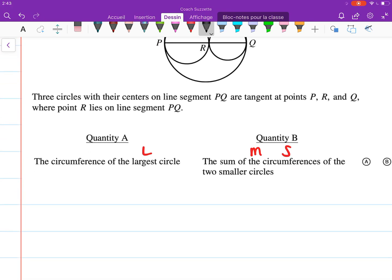Let's get back to comparing the quantities. The circumference of the largest circle - how do we find the circumference of a circle? It's 2πr, or we could say πd. So the circumference of the largest circle is 2π times the radius, or π times the diameter of the largest circle.